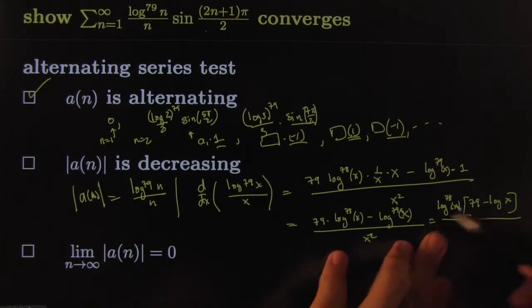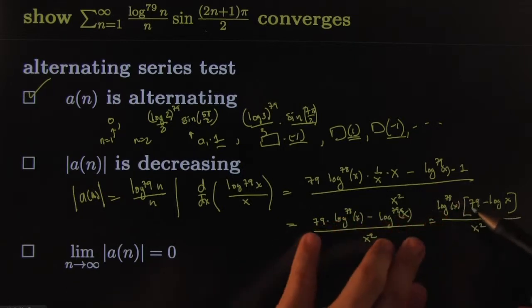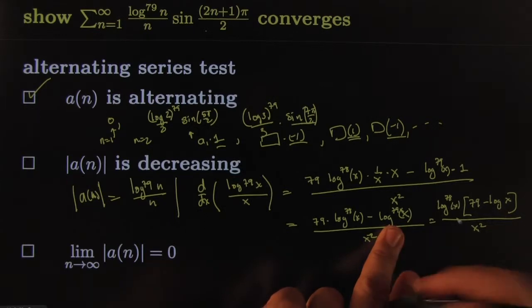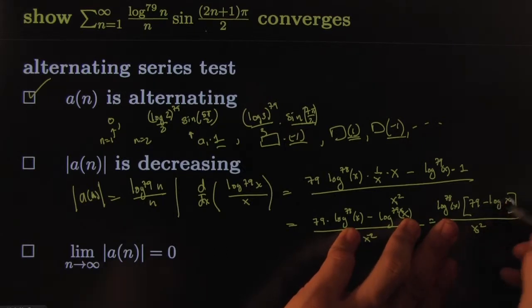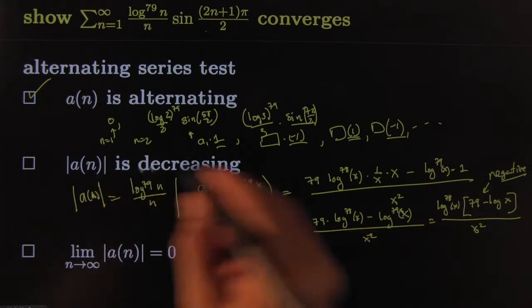So I will factor out a log to the 78th power of x, and that would leave a 79 minus a log x all over x square. In fact, I would do that because I have 79 of those here, and I have 78, so I could factor out 78 of them. That would leave just a 79 there, and 1 log x there, of course. And for large x's, this is positive again. For large x's, this is positive. And of course, for large x's, this will be bigger than 79. And so this will be negative for large x's, and that shows you that for large x's, this is in fact decreasing.